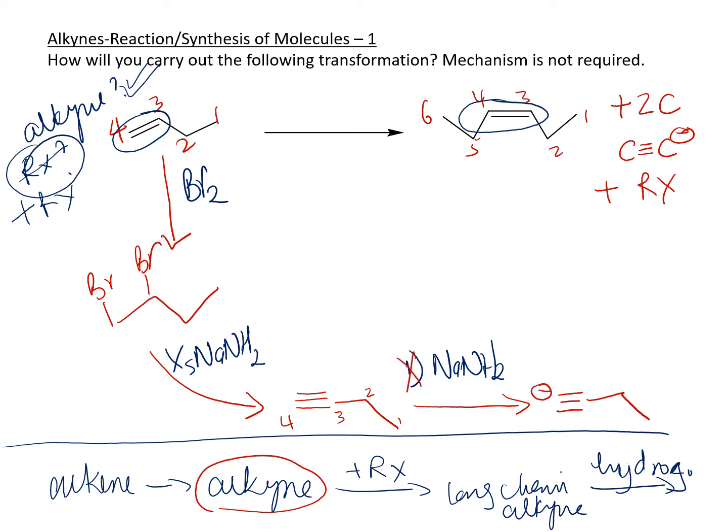And then I'm going to go ahead and add the two carbon fragment that I need. So this is my alkyl halide that I'm going to add. So now I have my triple bond in the middle here. 1, 2 on the side here. And I added two carbons on the other side. So that's what we have.